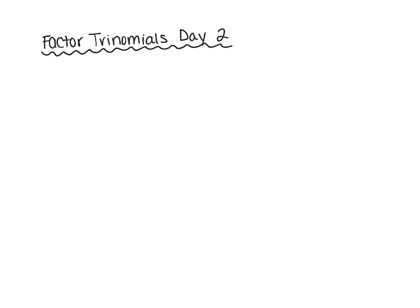Alright, so the first example I want you to write down is this one: x to the fourth plus 2x squared minus 24. You should notice that this trinomial is a little different than the trinomial from yesterday. You have a higher power than x squared — you have an x to the fourth and an x squared. And that's okay, as long as this middle exponent is half of the original. This middle exponent is half of this one, so we're good to go.